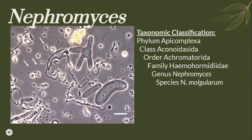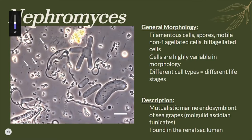On this slide we will see the taxonomic classification for Nephromysis. Nephromysis cells are highly variable in morphology and most can be described as filamentous in nature, with different cell types seen in its different life stages. It is a mutualistic marine endosymbiont of sea grapes, which are marine tunicates, and Nephromysis can be found in the renal sac lumen. It was first described as a parasite, but its high cell density in molgulids could mean that Nephromysis infection actually has a net benefit to its hosts, suggesting a mutually exclusive association due to a long evolutionary history.